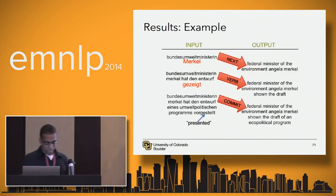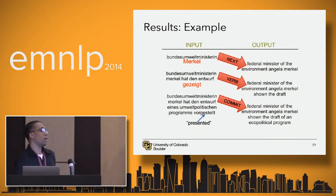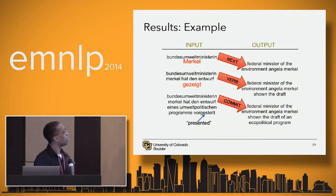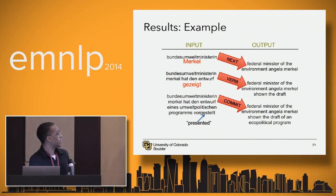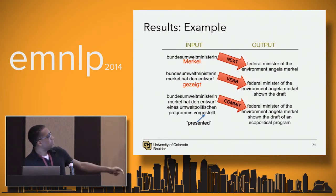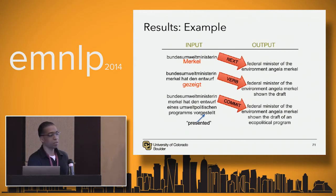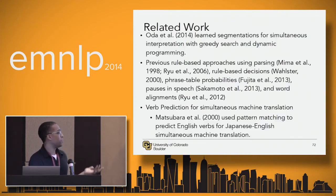One thing to keep in mind: since we're using a BLEU-based metric, some things don't get credit that should. For example, the verb 'gezeigt' is predicted and translated as 'shown', when in fact the actual verb is 'presented'. This is actually a very reasonable translation because 'shown' is semantically close to 'presented', but we don't get credit for this because we're using BLEU. This is a potential avenue of future research.